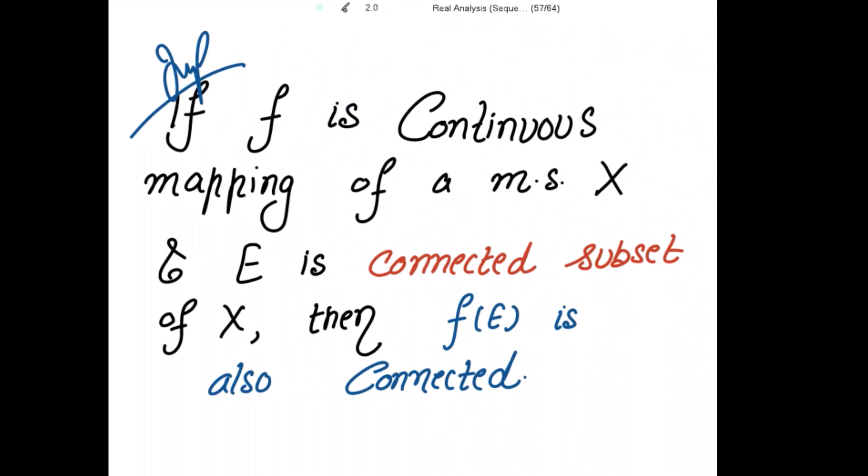This is a very important theorem on connected sets. If F is a continuous mapping over a metric space X and E is a connected subset of X, then F of E is also connected. What is given to us is that E is a connected subset of X, and we have to prove that F of E is connected.